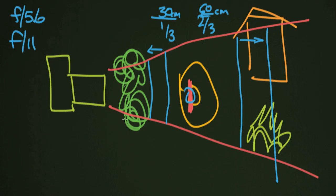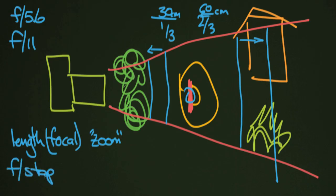Things that affect this are the length of your lens - your focal length, sometimes called your zoom. Your f-stop obviously is going to affect that. Also, your distance to your subject.